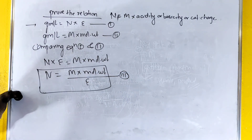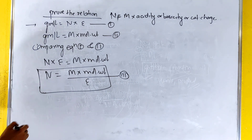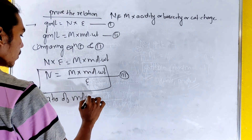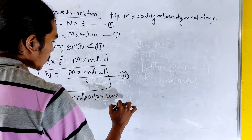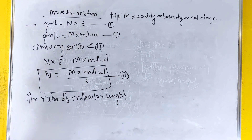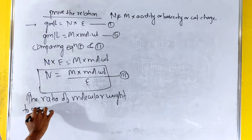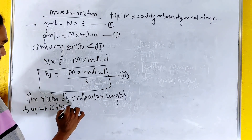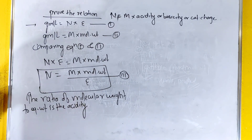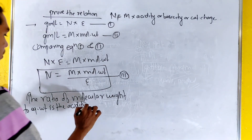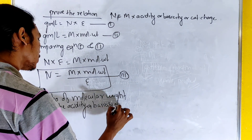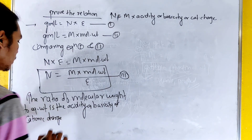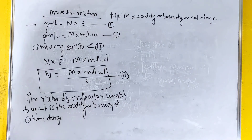Equation 3. The ratio of molecular weight to equivalent weight is the acidity, or basicity, or cationic charge of the salt.